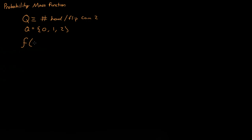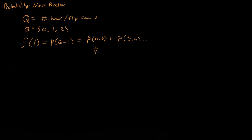So all the probability mass function is, is just saying: I want to know what's the probability of getting one head. So that's simply asking what's the probability of q equaling one — what's the probability that if I flip a coin twice, one of those flips was heads. That equals the probability of getting heads then tails, plus the probability of getting tails then heads. Each of those is one-fourth, so the probability of getting one head is two-fourths, or 0.5.